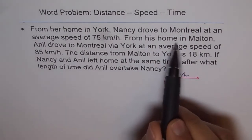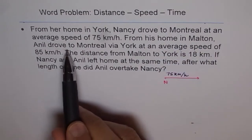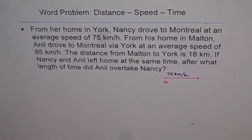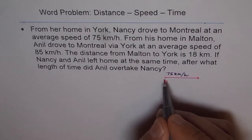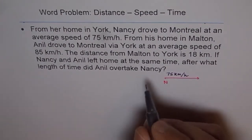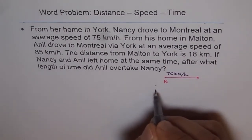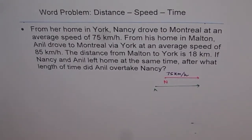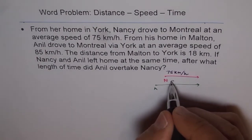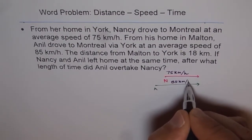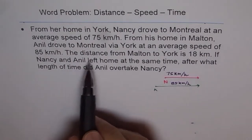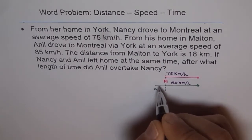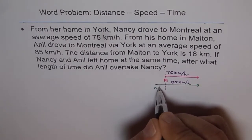Now it says from his home in Malton, Anil drove to Montreal via York at an average speed of 85 kmph. That means Malton is somewhere before York. So from here, this is Anil and he drives towards Montreal. The speed is given as 85 kmph. The distance from Malton to York is 18, so we write 18 here.